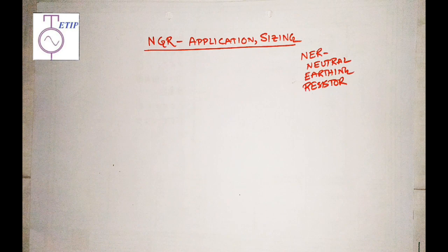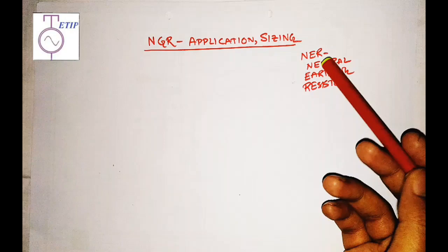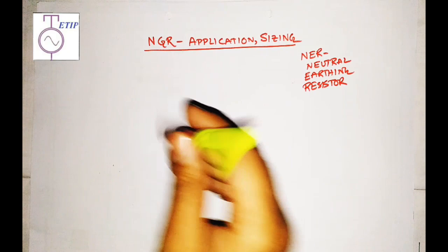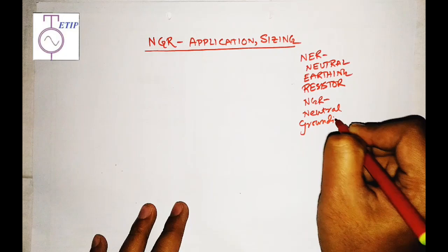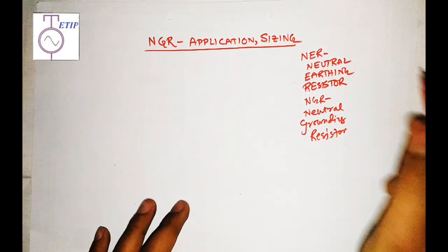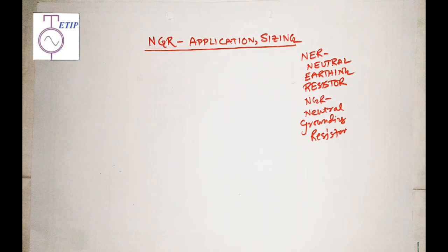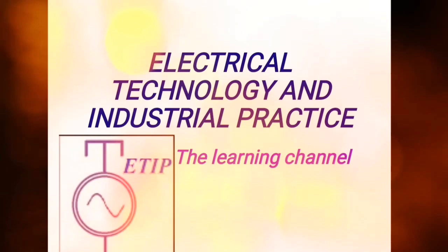Hello everybody, welcome back to my channel, Electrical Technology and Industrial Practice. Today our topic is NGR — its application and sizing. NGR is also known as NER, or Neutral Earthing Resistor. In general, NGR stands for Neutral Grounding Resistor. We will see what the specifications are, how it is designed, how it is sized, how the ohmic value is calculated, and how it is connected.